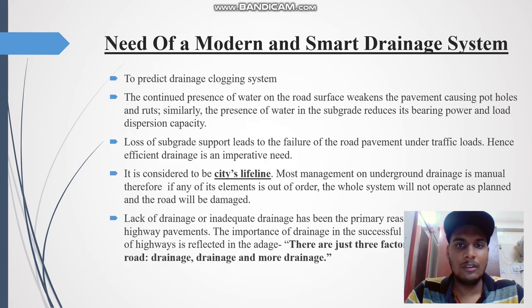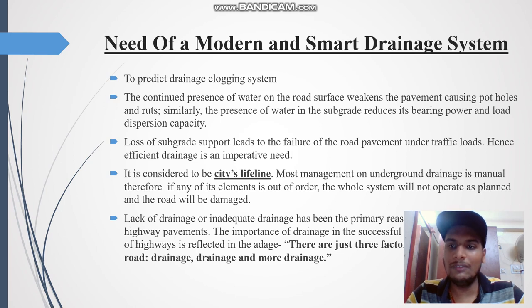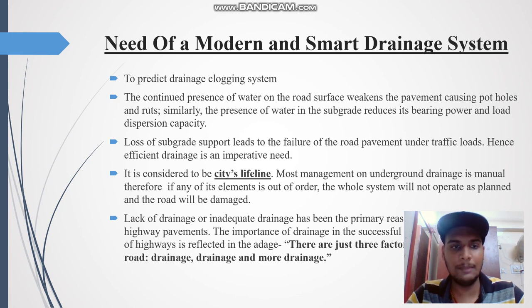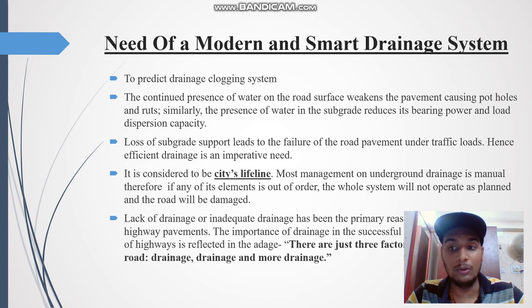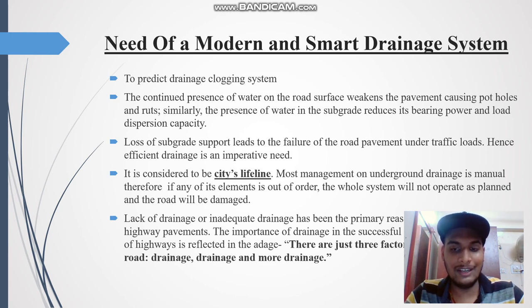One of the main reasons we need a modern and smart drainage system is to prevent drainage clogging. The continued presence of water on the road surface generally weakens the pavement, forming potholes and ruts, reducing subgrade strength and load capacity, leading to the failure of road pavement under traffic loads. Hence efficient drainage is critically needed. It is said that for a successful maintenance and operation of the highway, there are just three factors necessary: drainage, drainage, and more drainage.